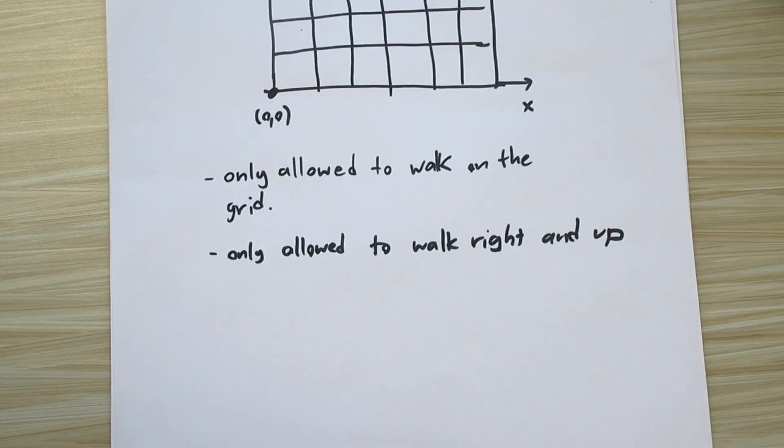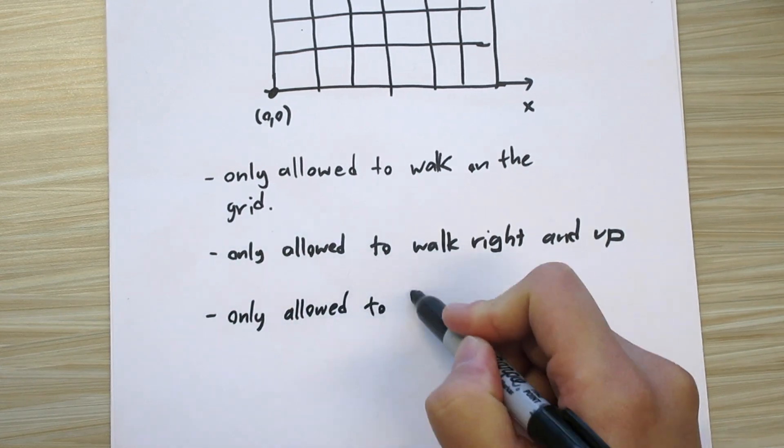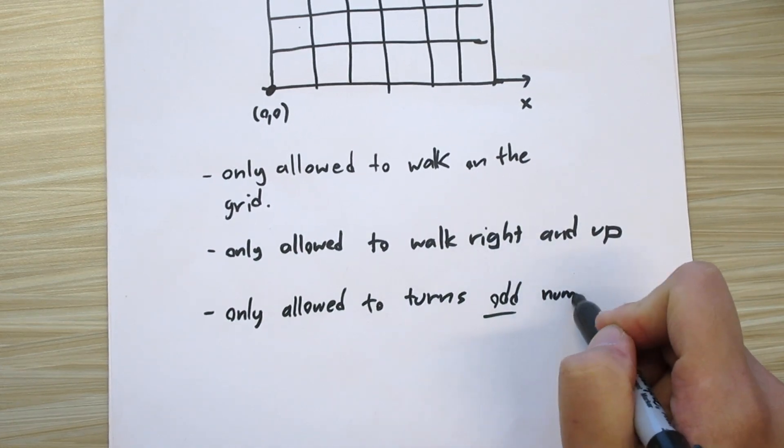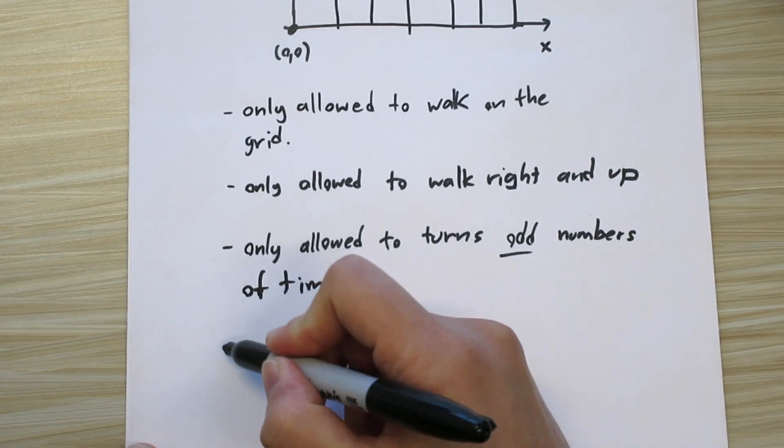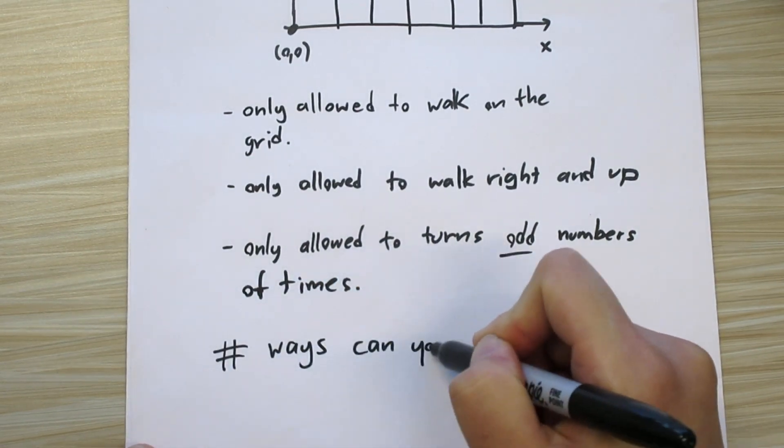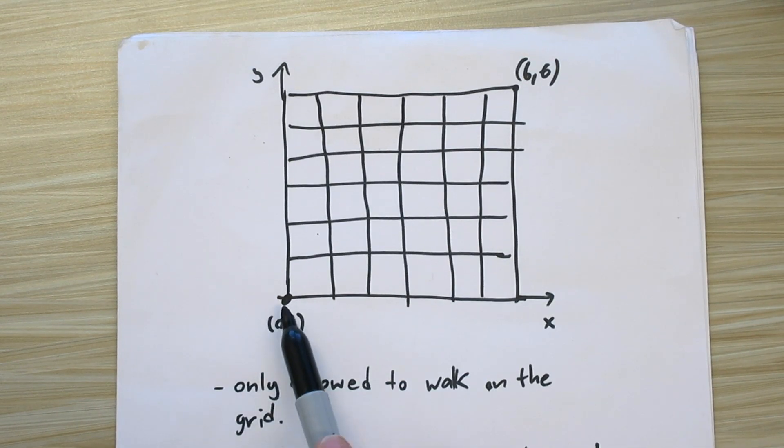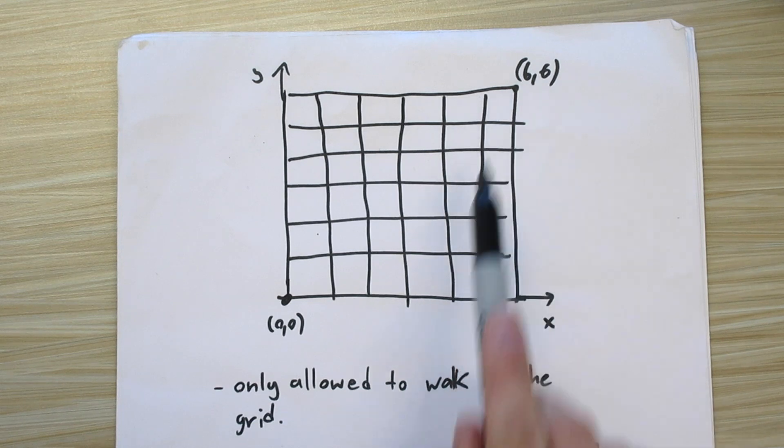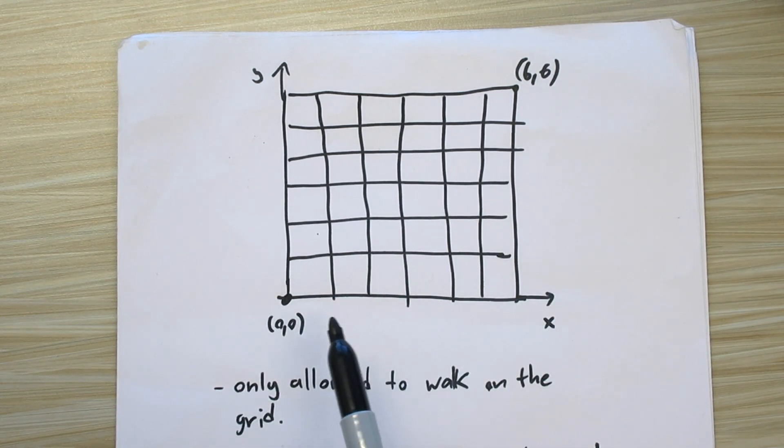And also you're only allowed to walk right and walk up. And one last condition is, probably the most important condition is, you're only allowed to turn odd number of times.